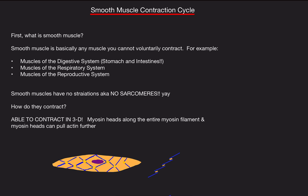First, what are smooth muscles? Smooth muscles are basically any muscle that you cannot voluntarily contract. For example, muscles of the digestive system — your stomach, intestines — you cannot voluntarily contract them. The same goes for your respiratory system or reproductive system. Smooth muscles have no striations, meaning no sarcomeres, so no H zone, no Z line, no I band — none of that.